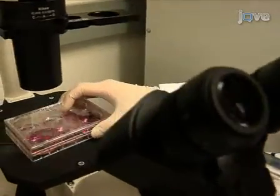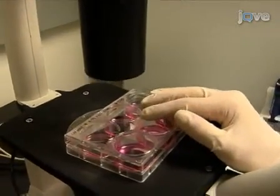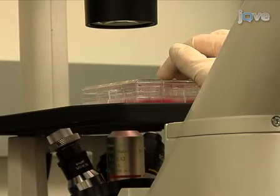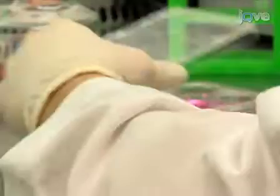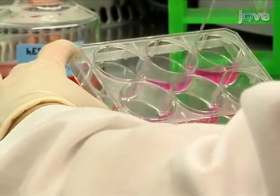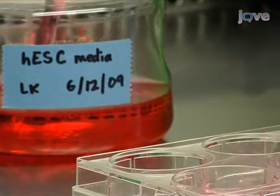After the five minutes, observe the colonies under the microscope. The enzyme should cause a subtle but observable change in the colony edges. They become more defined and a light halo may appear around them. In the biological safety cabinet, gently aspirate the enzyme from each well and replace with two milliliters of human ES cell culture medium.